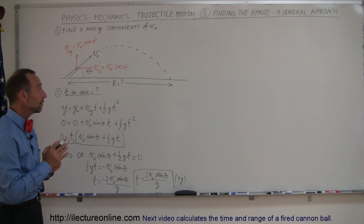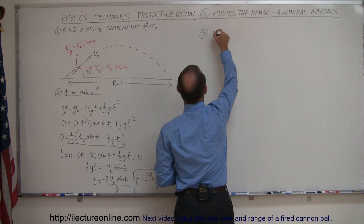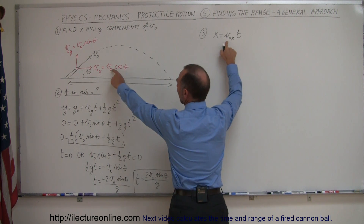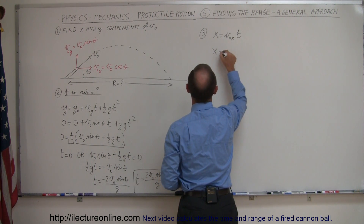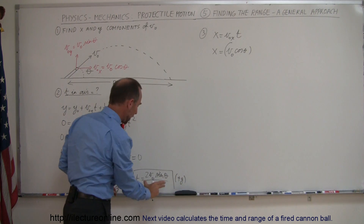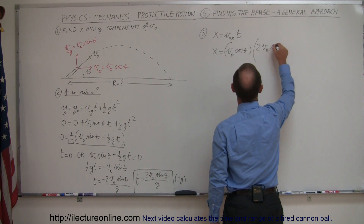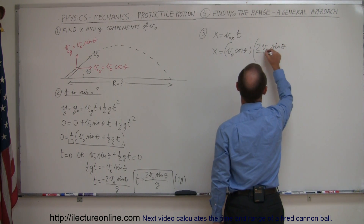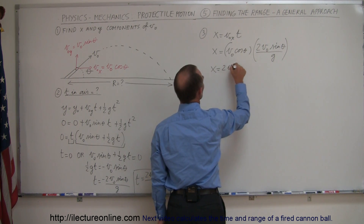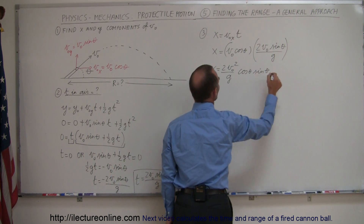Now we have the time in the air, so we can figure out how far this object is going to go. We use the equation x equals v-initial in the x direction times time. The v-initial in the x direction is v-initial times the cosine of theta. The range x equals v-initial times the cosine of theta, multiplied by the time we found: 2 v-sub-naught sine theta over g. Simplifying, we get x equals 2 v-sub-naught squared over g times the cosine of theta times the sine of theta.